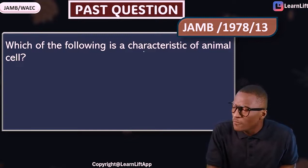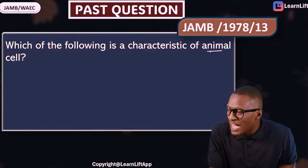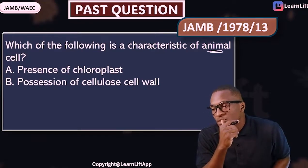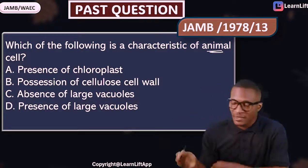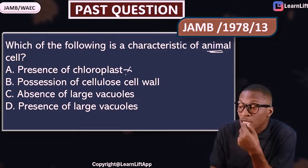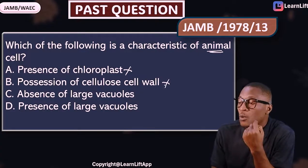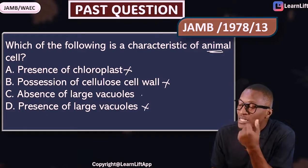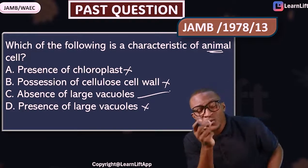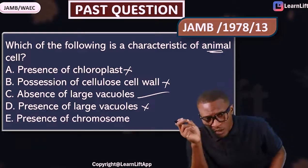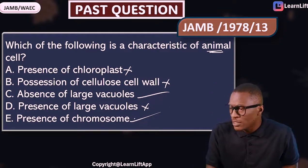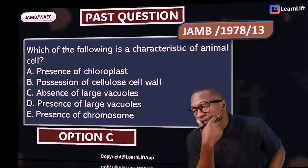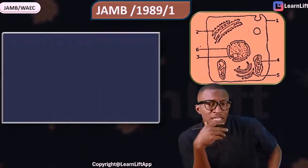Let's take a JAMB past question: 'Which of the following is a feature of animal cells?' The options include presence of chloroplasts, cell wall, absence of a large vacuole, and presence of chromosomes. Chloroplasts are in plant cells. Cell wall is in plant cells. Both plant and animal cells have chromosomes. The correct answer is absence of a large vacuole — that is the feature of animal cells.